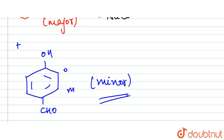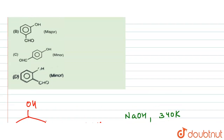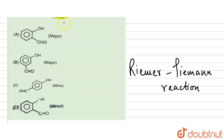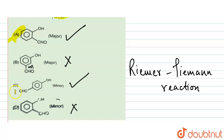This complete reaction is known as the Reimer-Tiemann reaction. Looking at the options: the meta position product is incorrect; the ortho product is correct; the minor para product being correct is also confirmed. Therefore, our correct answer is option A and option C.